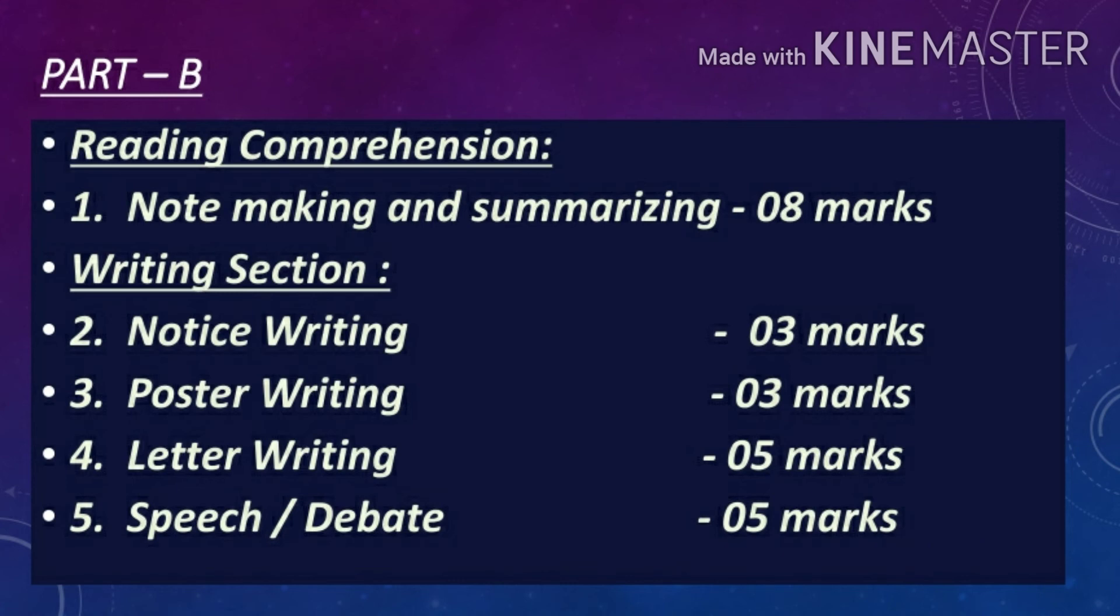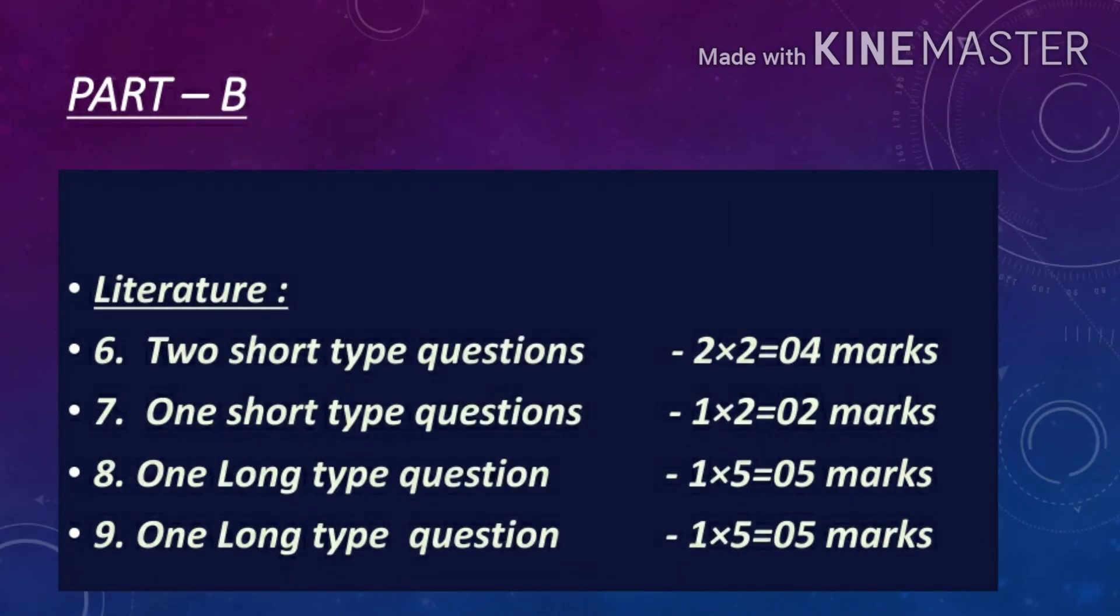Now talking about literature, first you will have two short type questions, each will carry 2 marks. One question will be from prose and one question will be from poetry from your book Hornbill. Total 4 questions will be there in which you have to answer any two within 30 to 40 words.